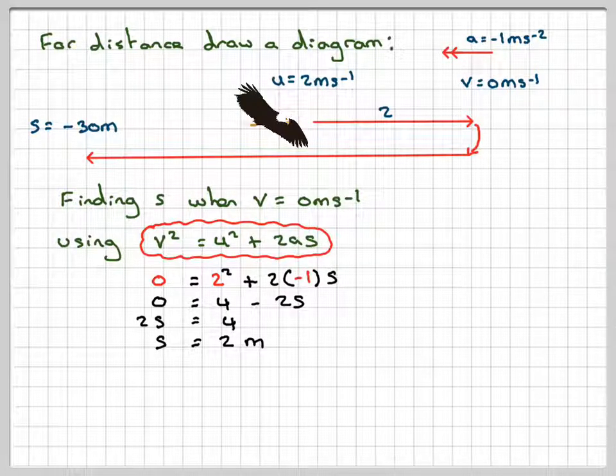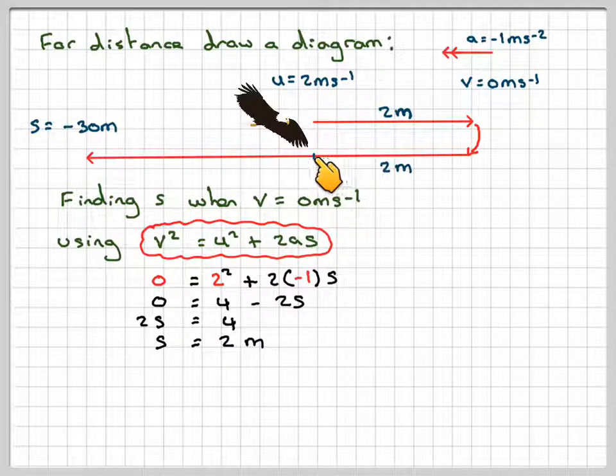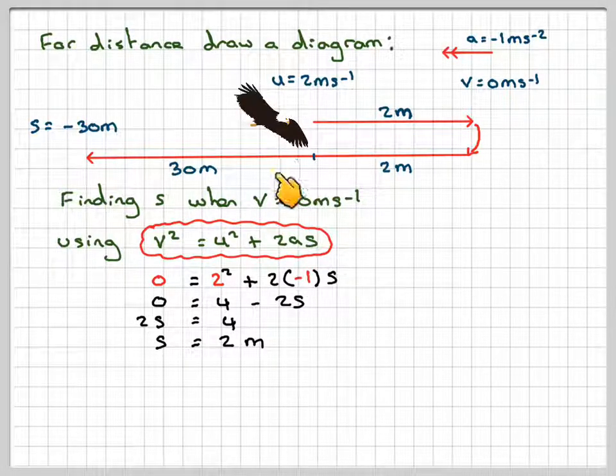So this distance here is 2, and this distance up to this point here is 2. Therefore, and then this distance is 30.